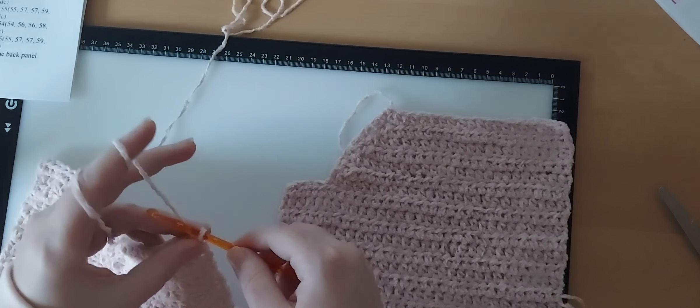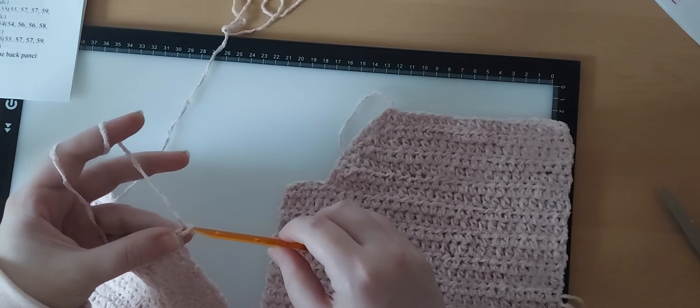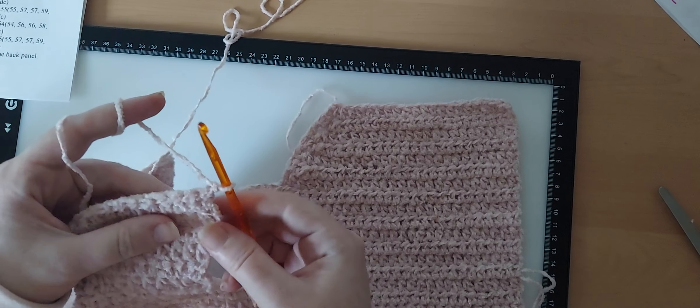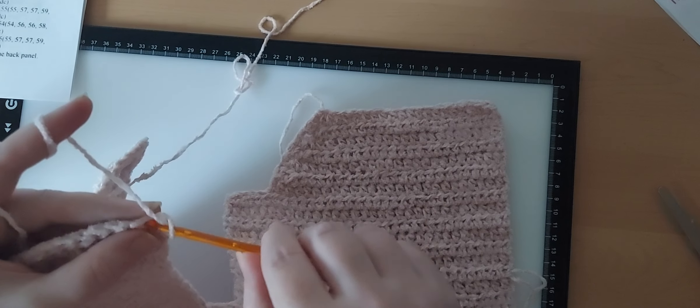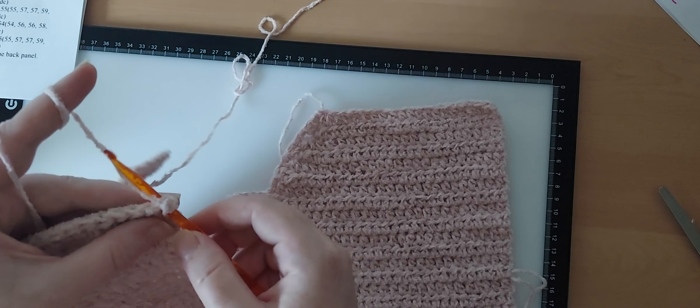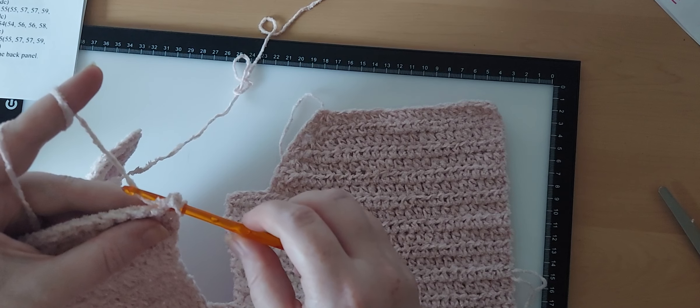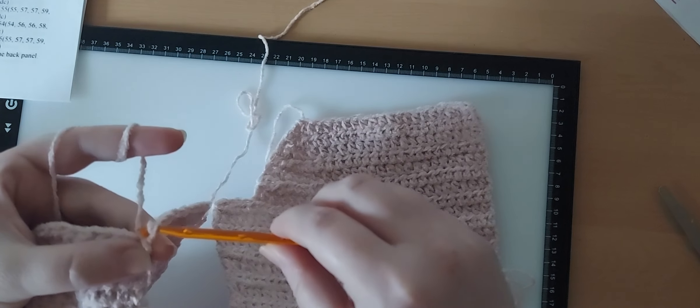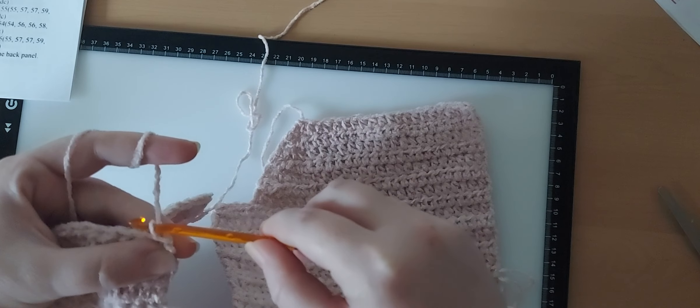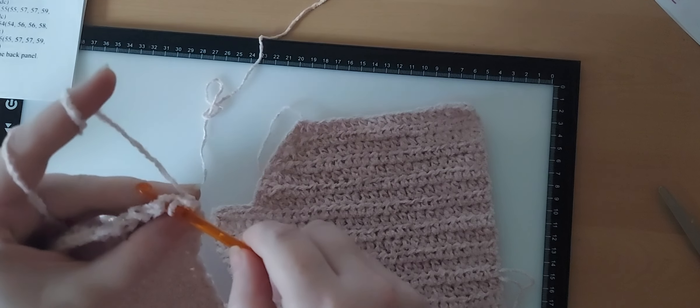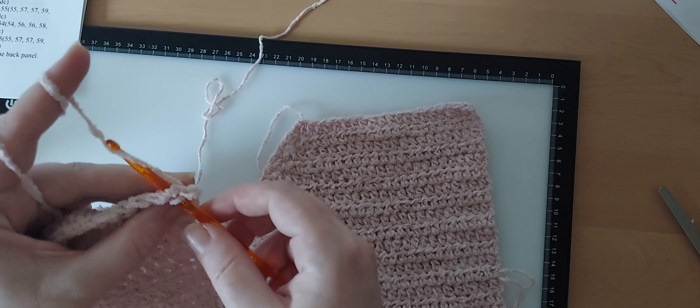All you're going to do is go into... you know what, it doesn't say to chain 1, but I'm going to do it. It really doesn't make that big of a difference. So chain 1, just to make it easier for you. Then you're going to go into your first stitch and do a slip stitch. You go into the stitch, you grab the yarn, you pull it through, and then you pull it through the loop that was already on your hook, just like that. That's 1.